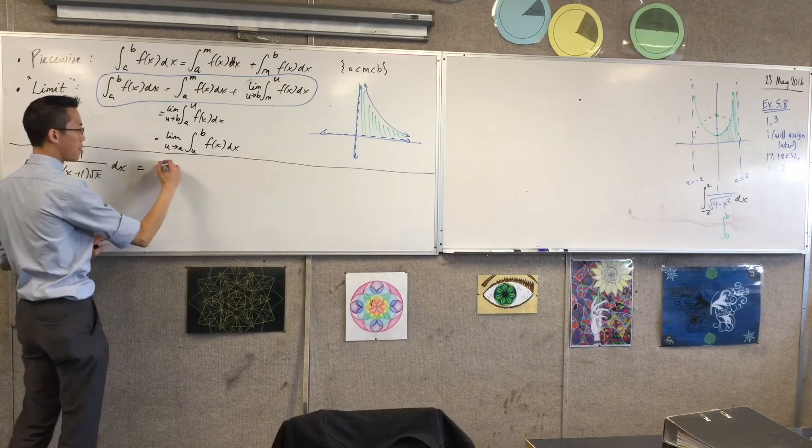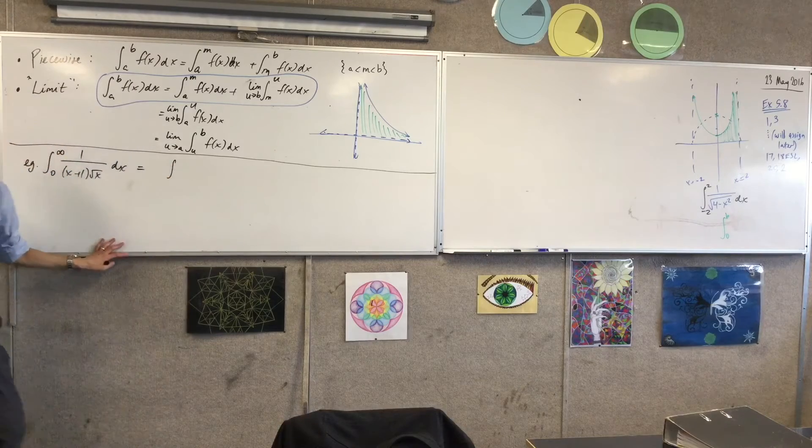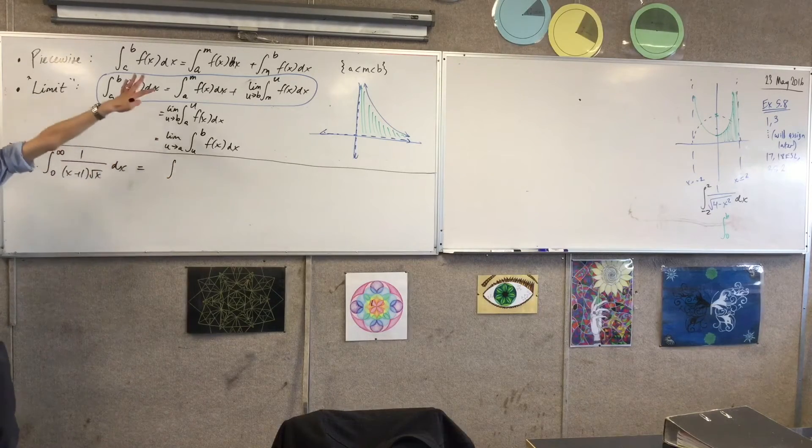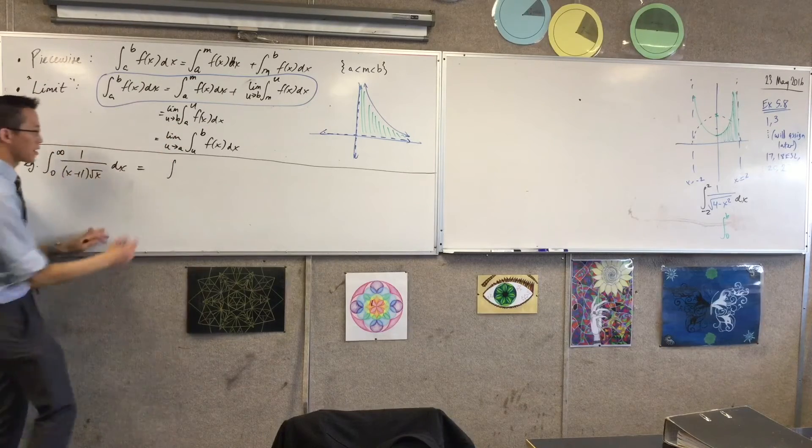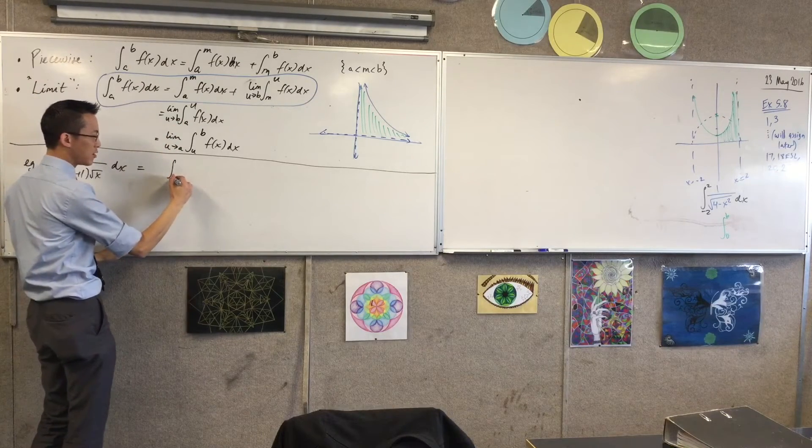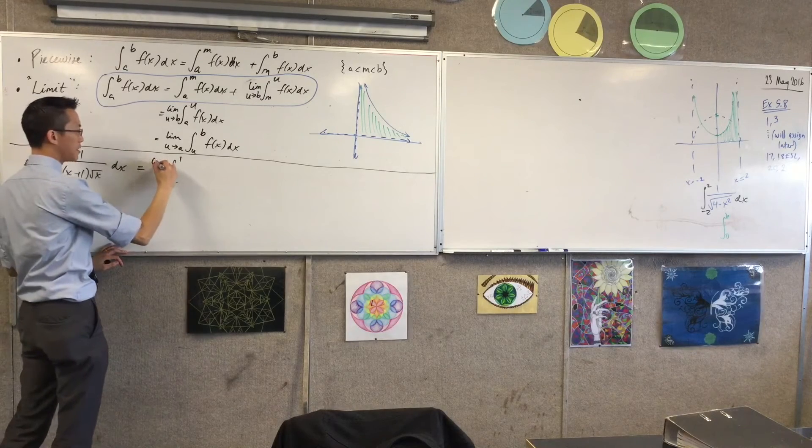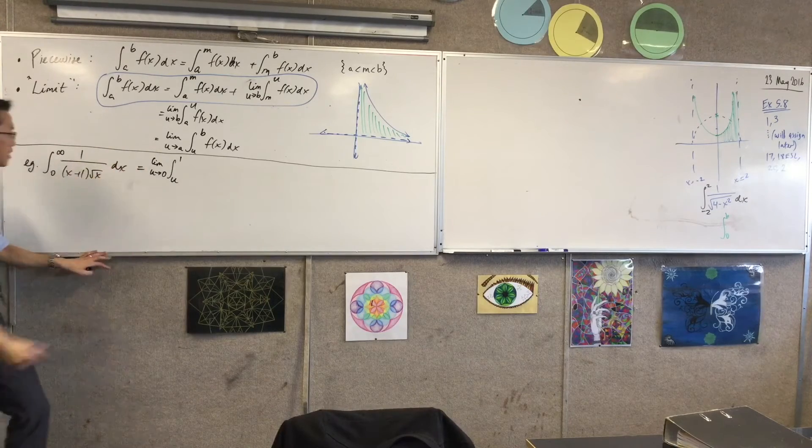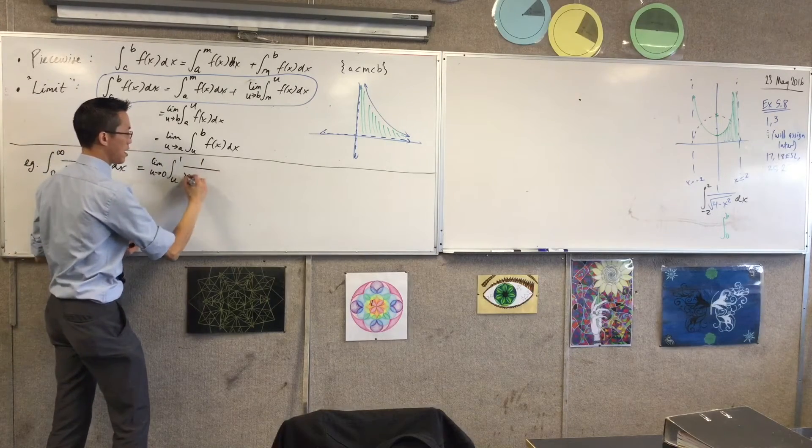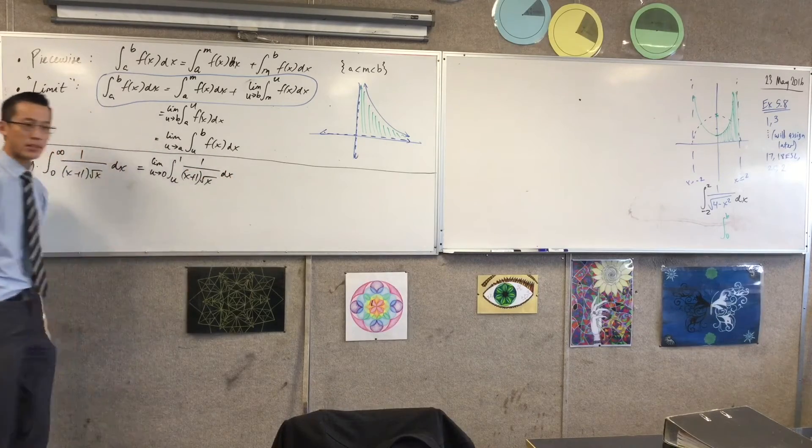So I'm going to go from 0 to 1, but instead of writing 0 to 1, I'm going to use this limitation, because I really actually can't get to 0, right? You see that? So I'm going to say, let's go from u to 1, and see what happens as u approaches 0. So this is my first part of the interval. It's 1 over x plus 1 root x, with respect to x.